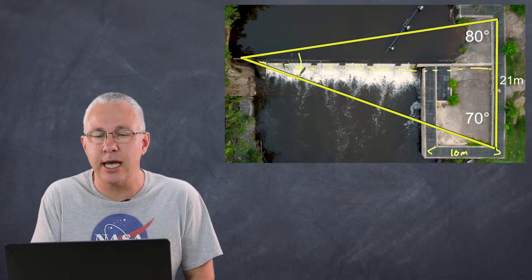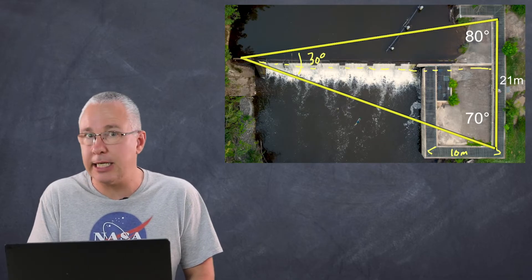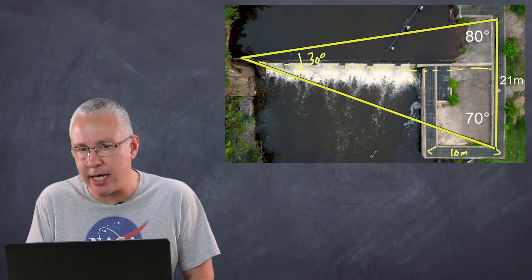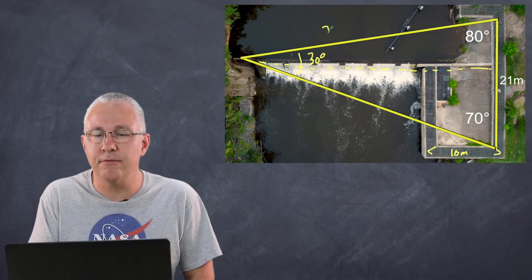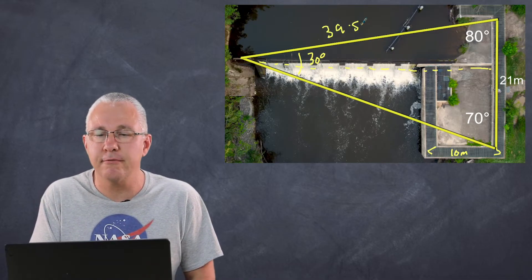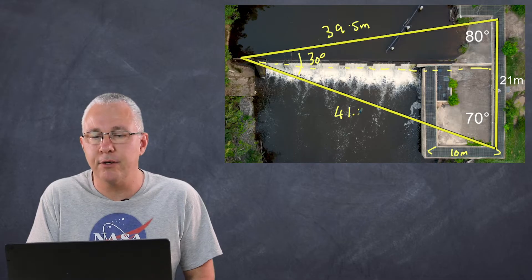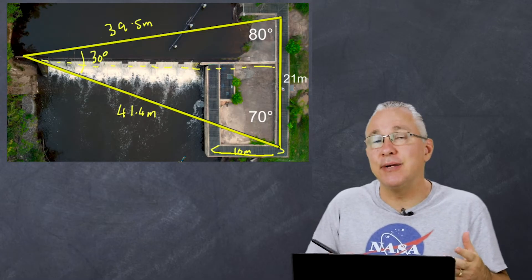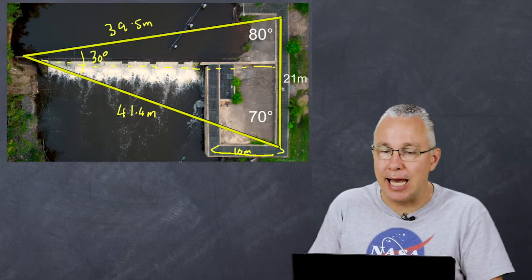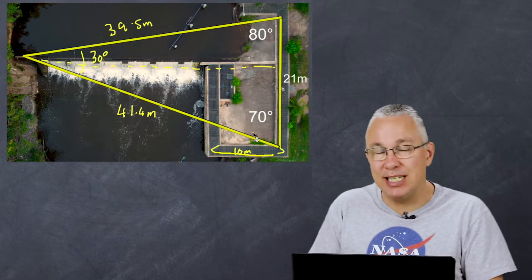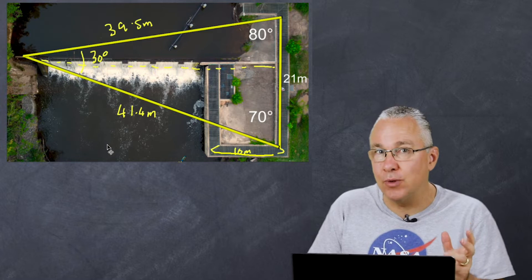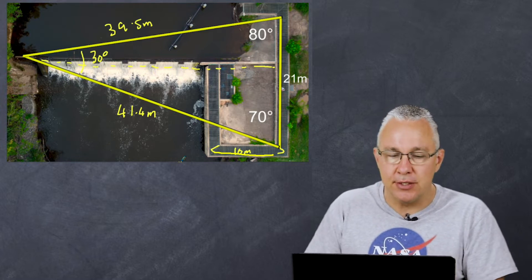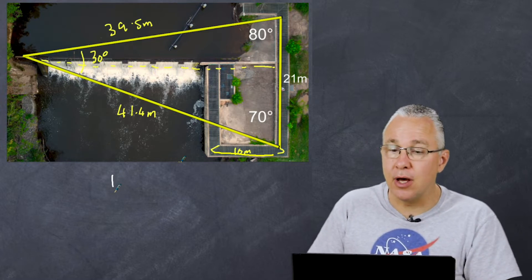I first of all need to know the remaining angle. I've already got 80 and 70 here, so I now have 30 degrees in here. I can now use a sine rule that gives me values here of 39.5 meters and 41.4 meters. Now that we've worked out the sides, it's very basic trigonometry to work out our height. We can see we have a right-angle triangle of which we know the hypotenuse.